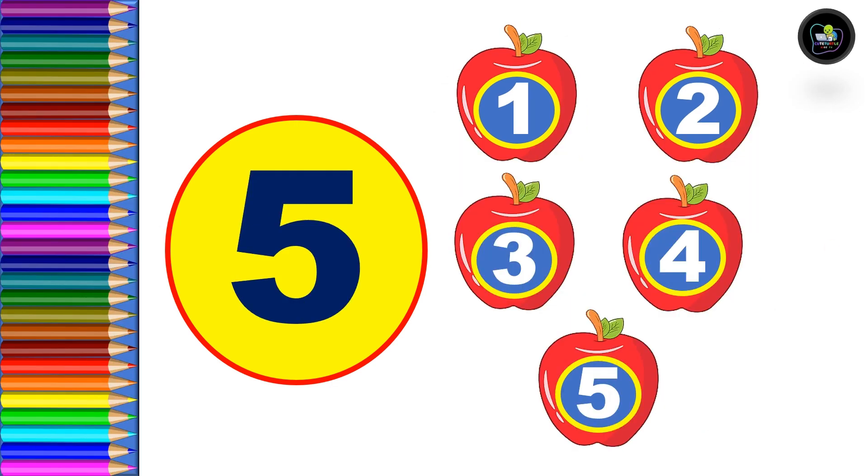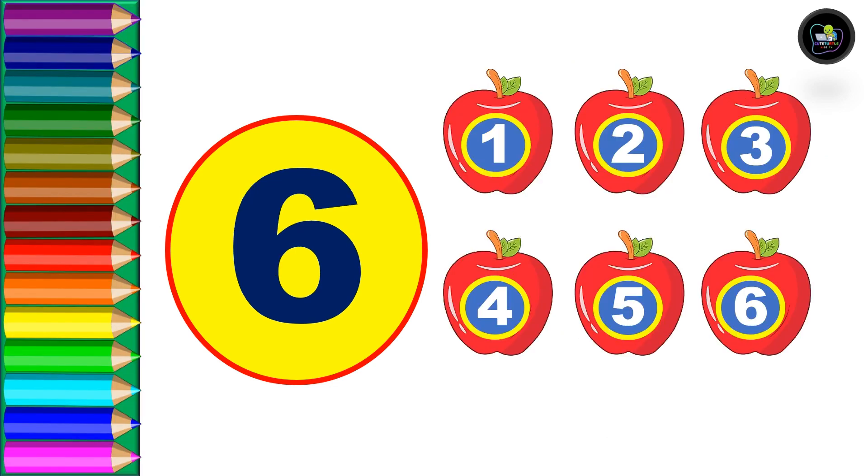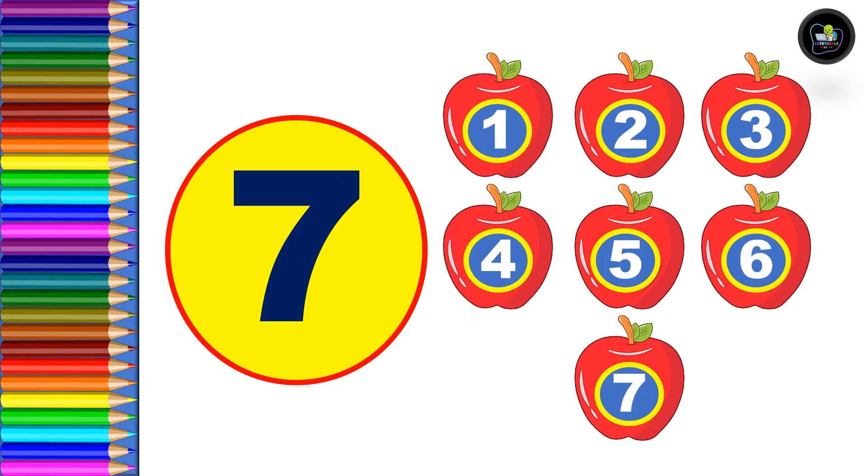Next, five: one, two, three, four, and five, five apples. Next, six. First row: one, two, three. In second row: four, five, six, total six apples.